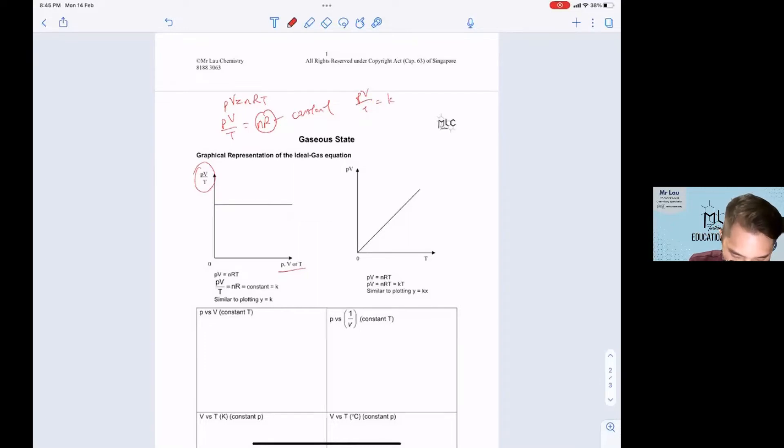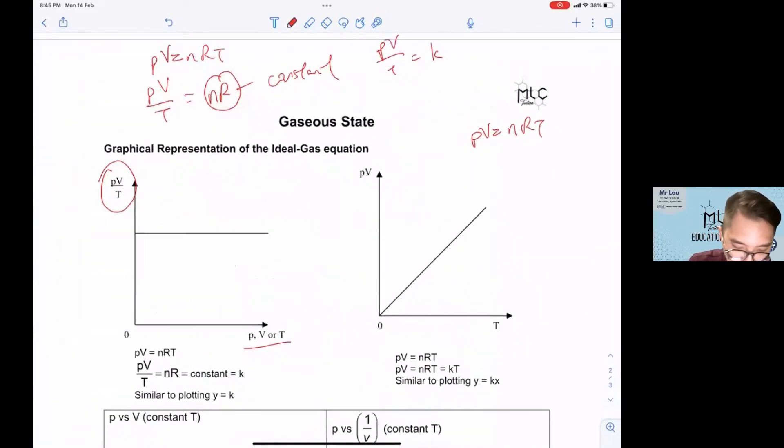Another example: PV equals nRT. If you are asked to sketch PV against T, put the y-axis on the left-hand side. Therefore, this will be a normal straight line where it equals your y equals mx graph, where this is your x and this is your y. So you get a normal graph with a straight line cutting through the origin.